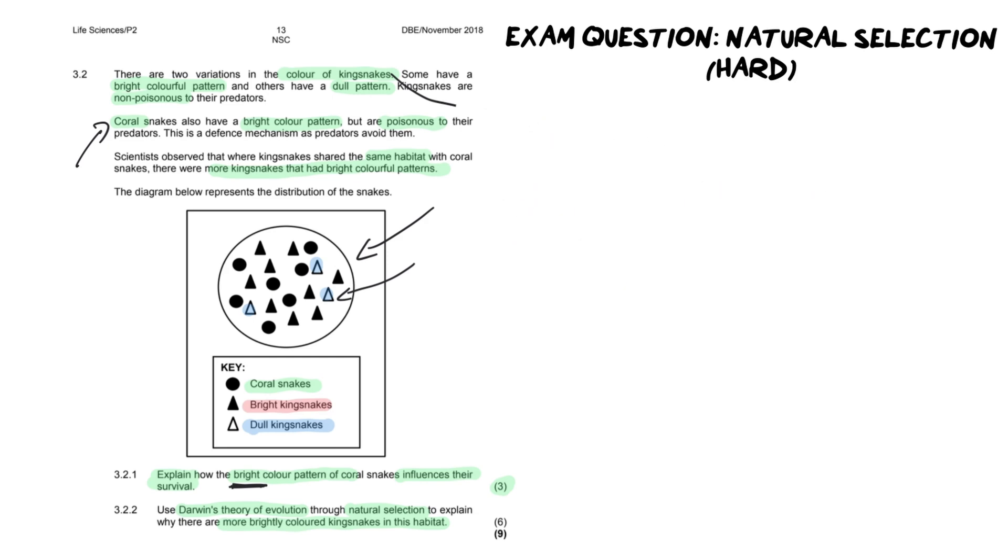However, this part is important. You can't simply just use the guideline as is, because right now it says something like there is variation in a population. Some organisms have the favorable trait and others do not. Those that have the favorable trait survive. Those that do not have the favorable trait die. You have a general answer there, but you don't have a specific answer that is matching our snakes.